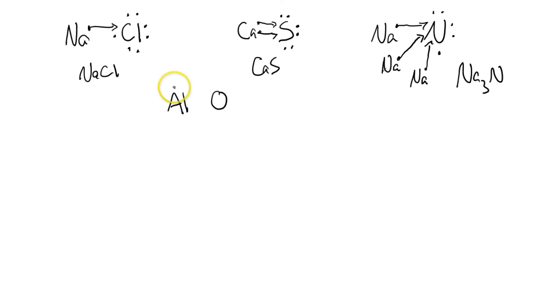Aluminum here has 3 valence electrons because it is in group 3 on the periodic table. Oxygen is in group 6, so that's 1, 2, 3, 4, 5, 6 electrons. So oxygen has 2 open spaces.